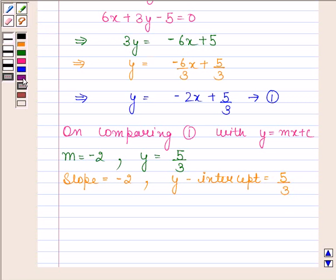Hence, the given equation in slope-intercept form is y equals minus 2x plus 5 by 3. Its slope is minus 2 and its y-intercept is 5 by 3. This is our required answer. This completes the session. Bye and take care.